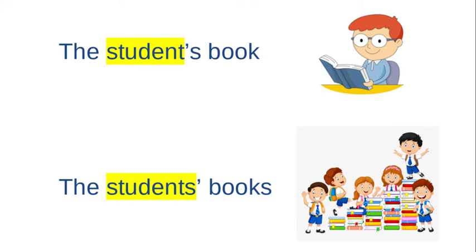If we look at the highlighted words — in the first example, the student's book, meaning one student — we have highlighted the one student, and then we add the apostrophe S to show that the book belongs to the student.